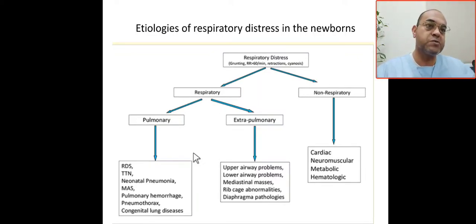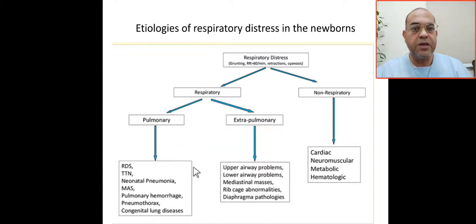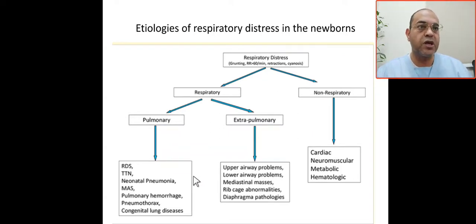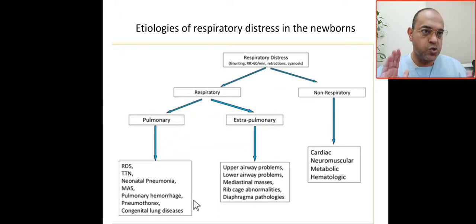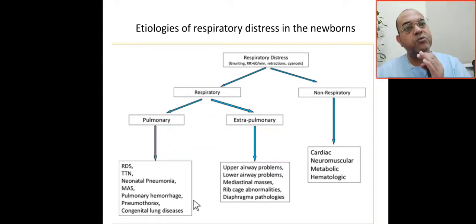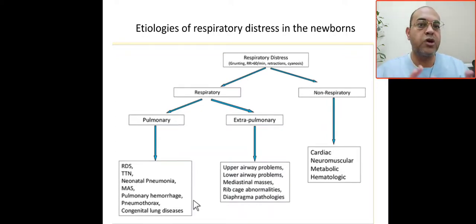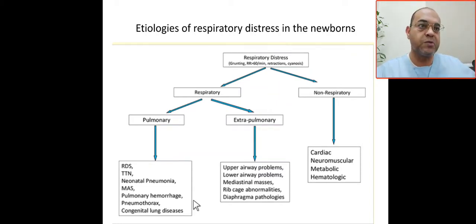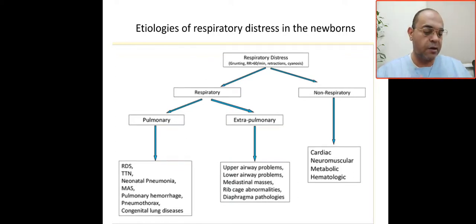RDS complicated with pulmonary hemorrhage or pneumothorax. If the baby is full term, it will be neonatal pneumonia or meconium aspiration, especially if there is a history of meconium or intrapartum asphyxia. Also congenital lung disease. So for pulmonary causes: RDS and its complications — pneumothorax, pulmonary hemorrhage — or pneumonia, meconium aspiration, or congenital lung disease.